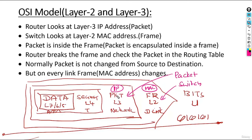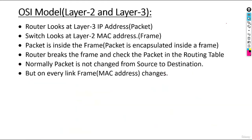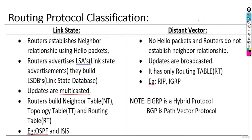The packet is inside the frame because the packet is encapsulated inside the frame. The router breaks the frame and checks the packet against the routing table. Normally, the packet does not change from source to destination — unless you do some kind of NAT, the source IP and destination IP remain the same. But on every link, what is changing is the frame.